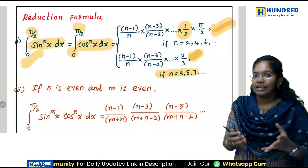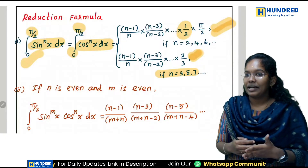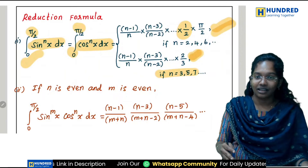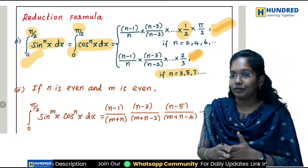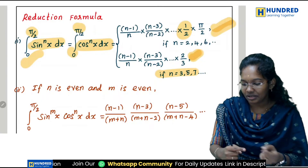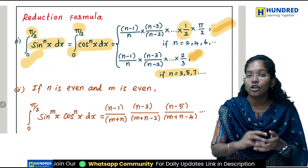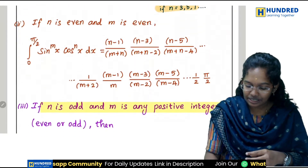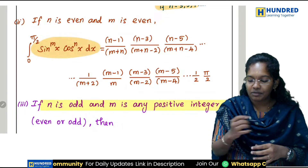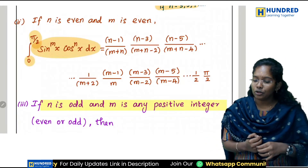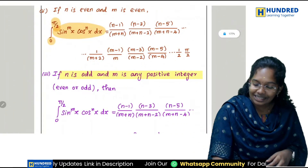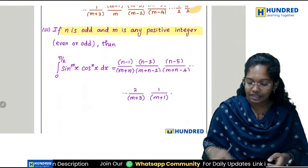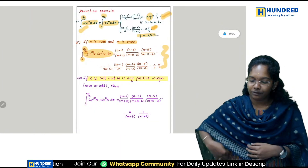There was a technical issue, sorry students. Last session we did exercise 9.4 and the 2-hour schedule is getting late, so I am going to wrap up. Reduction formula: when the limits are from 0 to π/2 with sin power n or cos power n, if n is even or m is even, you use this formula. Reduction formula on the whole is these 4 formulas.